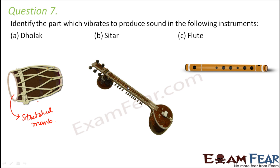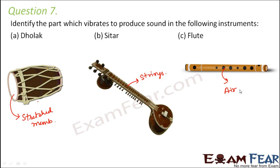In sitar, there are stretched strings, and when these strings are plucked they vibrate and produce sound. In the case of flute, it is a hollow pipe with holes on the body of the instrument. When you blow air through these holes, the air column inside starts vibrating, and this vibration of the air column produces sound.